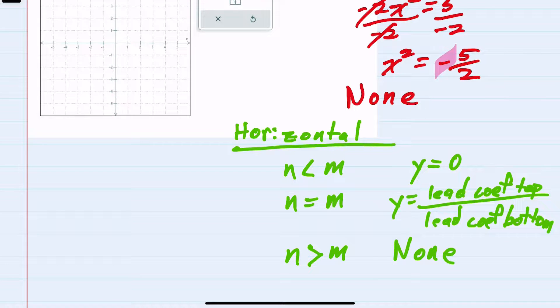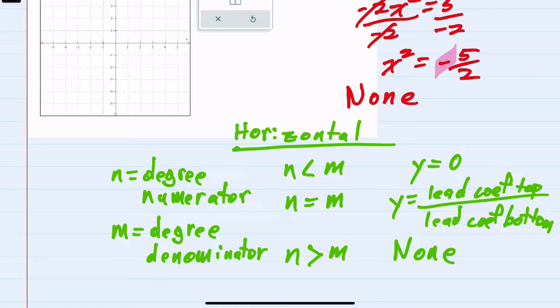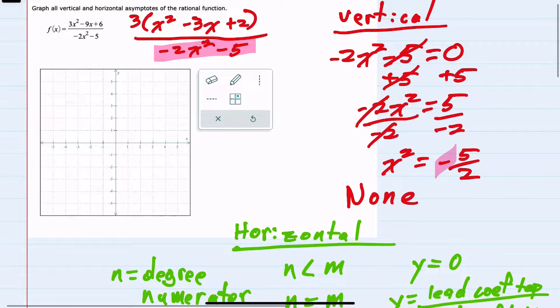To find the horizontal asymptotes, I should recall that I'm going to look at n and m, where n is the degree of the numerator and m is the degree of the denominator. When we look back at our function, the degree of the top is 2, so n = 2, and the degree of the bottom is also 2, so m = 2.